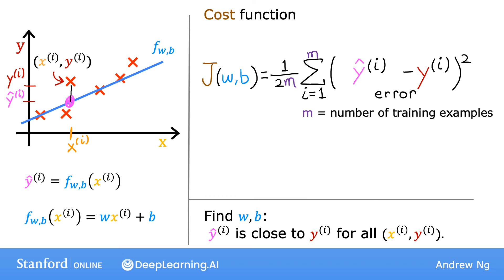This is also called the squared error cost function, and it's called this because you're taking the square of these error terms. In machine learning, different people will use different cost functions for different applications. But the squared error cost function is by far the most commonly used one for linear regression and for all regression problems, where it seems to give good results for many applications. Just as a reminder, the prediction y hat is equal to the output of the model f at x. So we can rewrite the cost function j of wb as 1 over 2m times the sum from i equals 1 to m of f of x_i minus y_i, the quantity squared.